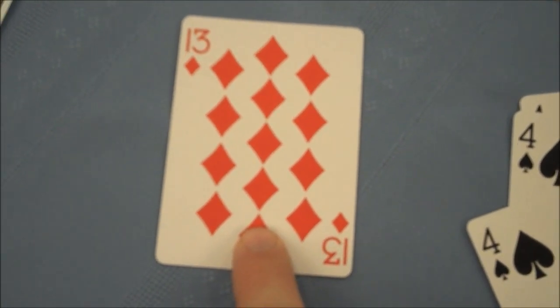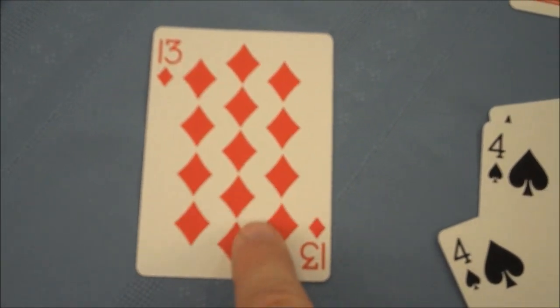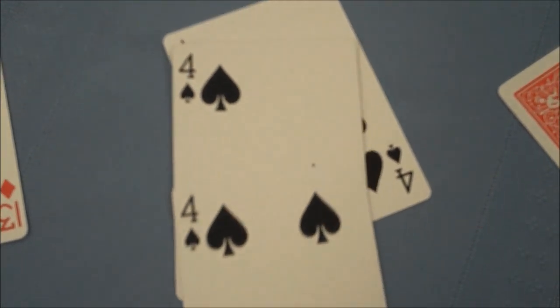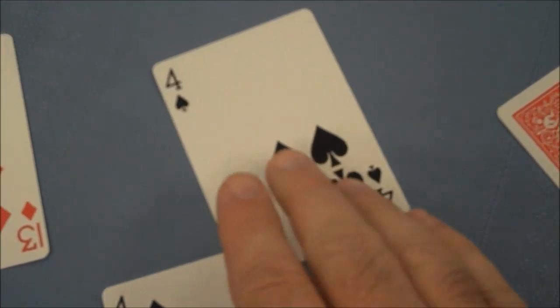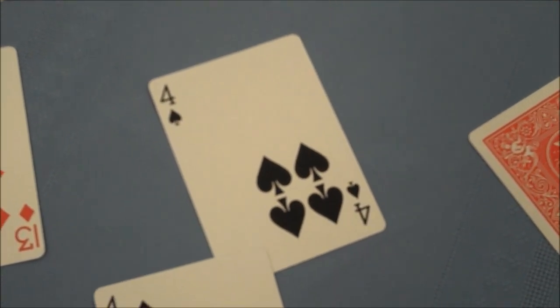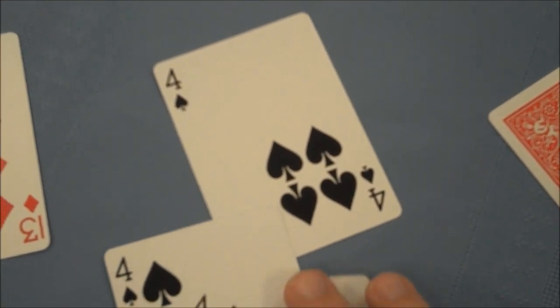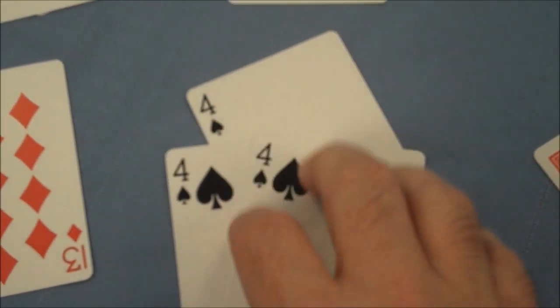This 13 of diamonds is a gaff that is also made by the company Royal. The four of spades pip matrix, this is an effect that was invented by a magician named Doug Kahn and it appears in his book Tricks of My Trade and in my opinion it's a far better effect.